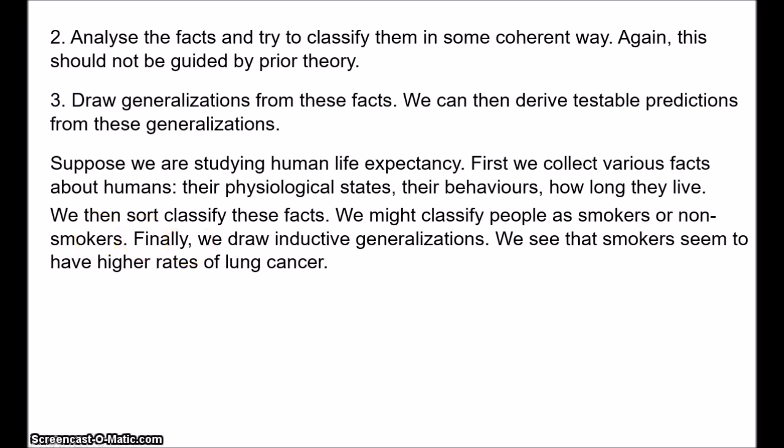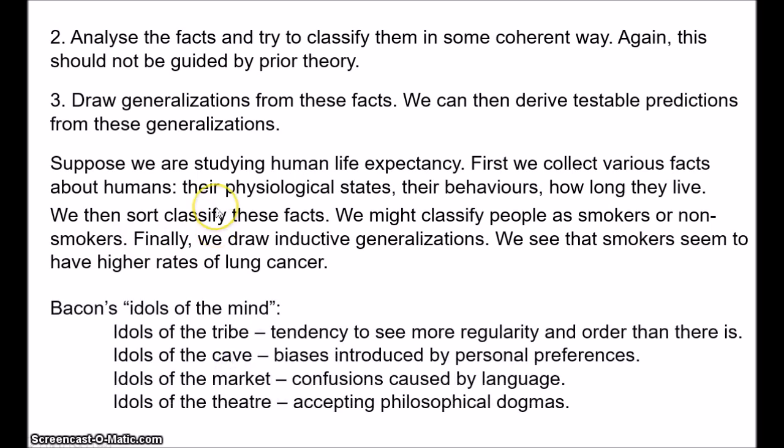If you start out with a kind of preconceived theory, the worry is that you will tend to just look for facts that fit the theory, and ignore those facts that don't fit the theory. So, the objectivity of science requires that we make neutral collections of observations. In this respect, Bacon was concerned to avoid what he called the idols of the mind. So, it's very easy to fall into errors. Many things can interfere with good reasoning, and these are the idols of the mind, of which Bacon identified four.